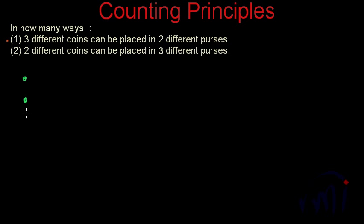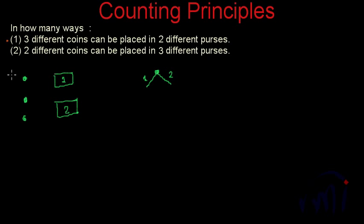We have three coins and two purses. If we take the first coin, it can go either to purse number one or purse number two. If the first coin goes to purse number one, then for the second coin we again have two choices — it can go to purse number one or purse number two. Similarly, when the first coin goes to purse number two, for the second coin we again have two choices. And for the third coin, again we have two choices.